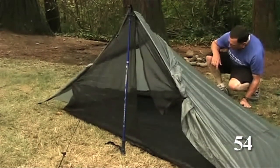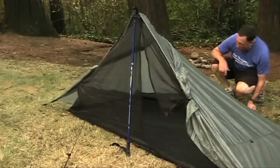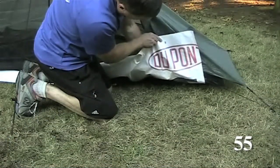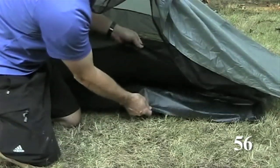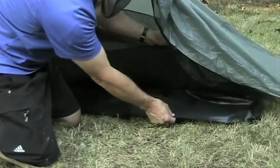The lightest ground cloth is the one you don't take. Just set up carefully. Try an ultralight ground cloth like a super thin painter's cloth or Tyvek or Sil Nylon. Trim your ground cloth just smaller than your tent to avoid pooling rainwater.